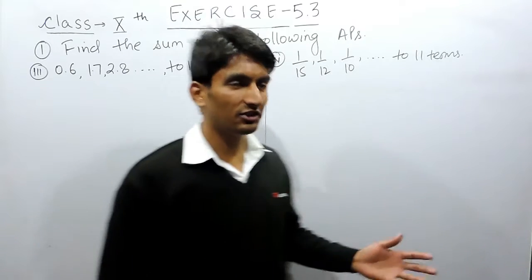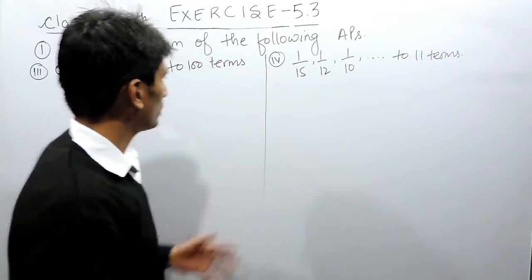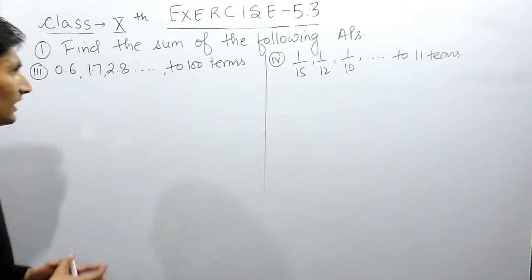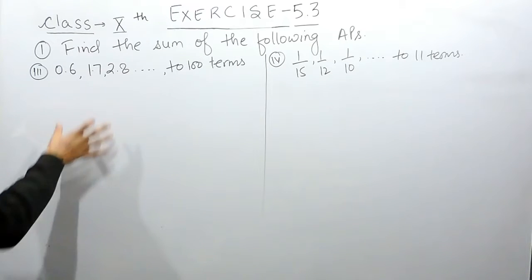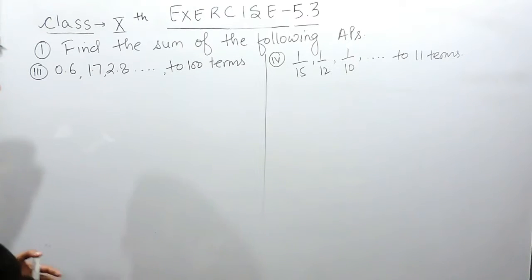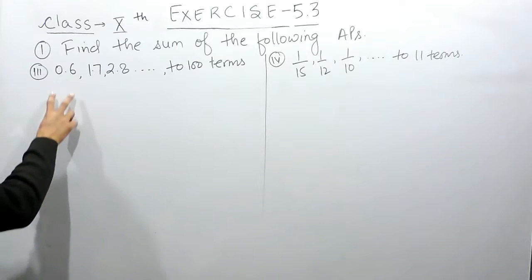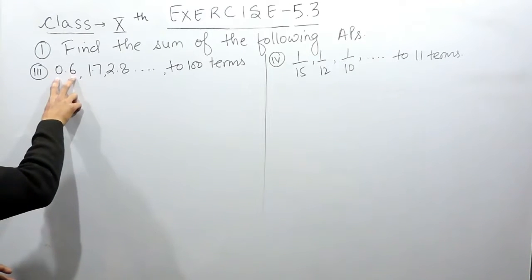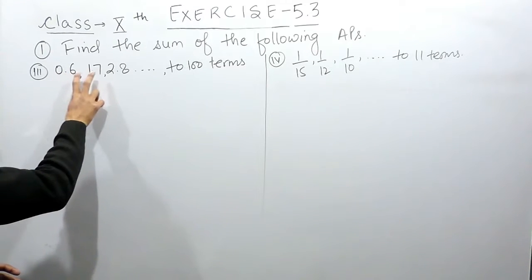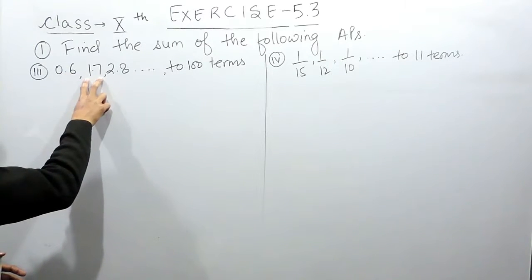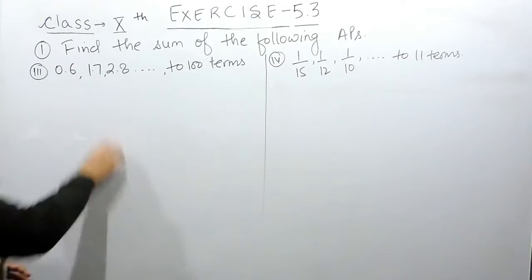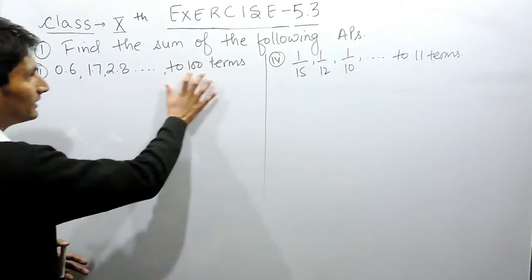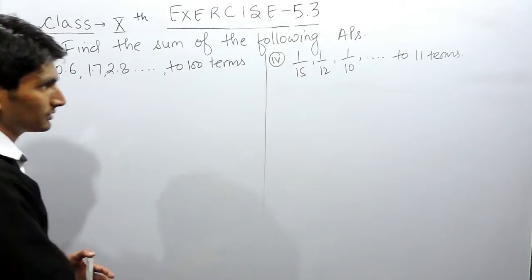Hello everyone. In this video we are going to solve the last two parts of question number one. Again you have to find the sum of these APs. The first term of this AP is 0.6, the second term is 1.7, the third term is 2.8, and you have to find the sum till 100 terms.